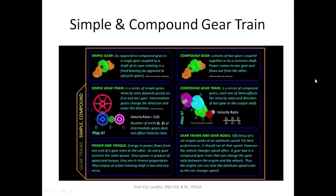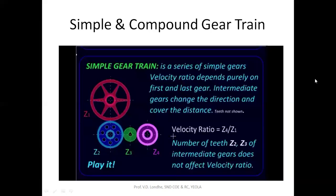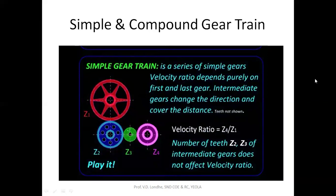Simple gear trains consist of single individually mounted gears whose axes of rotation are fixed in space. A simple gear train consists of a series of gears connected to each other forming a chain-like structure. In simple gear trains, only the first and last gear in the train decide the velocity ratio — all intermediate gears do not contribute to the velocity ratio.